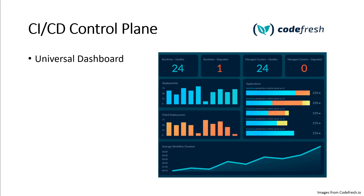Then comes the universal dashboard — it is actually quite mind-blowing. The graphics are really good, and not only are they good, they are useful too. In a very quick glance you can tell which of your pipelines are healthy, which have failed, how many clusters there are, if any cluster got degraded or has issues when you are trying to deploy, how many applications there are, in which region, how many deployments failed, and the whole workflow duration.